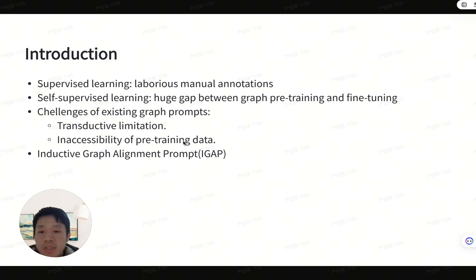In order to deal with the gap, there are some graph-prompt-based methods inspired from natural language processing. However, this method relies on the availability of source data and can hardly be applied in industrial scale networks where the graph is different in the fine-tuning stage.